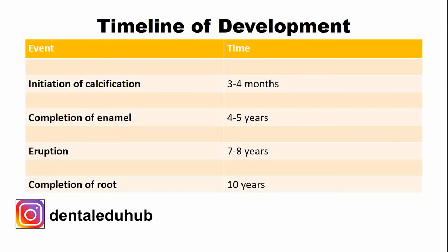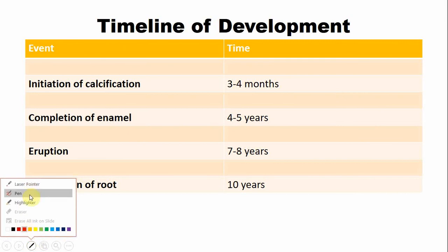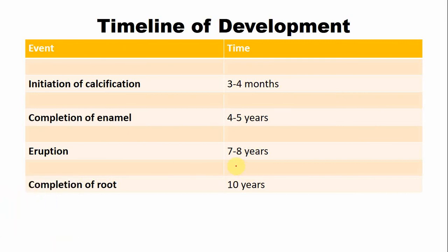The timeline or chronology of development: calcification or formation of the hard tissue of the crown starts at the age of three to four months. The crown is completed by the age of four to five years. The tooth emerges into the oral cavity by the age of seven to eight years. At emergence, only two-thirds of the root is formed; the remaining root takes around two more years, so by age ten years the root formation is completed.